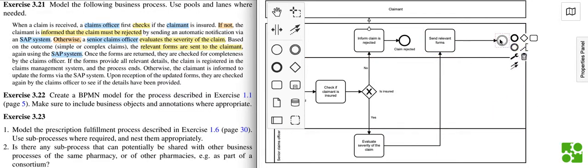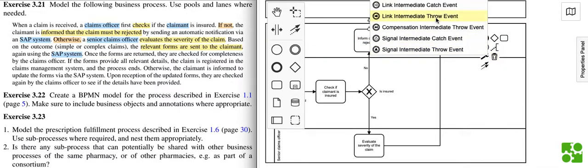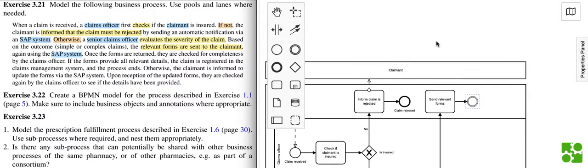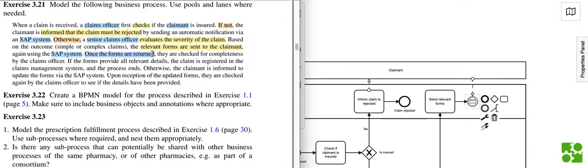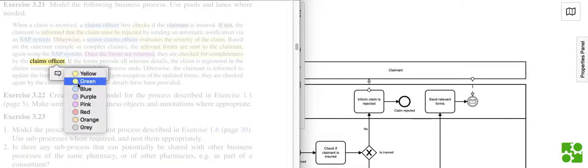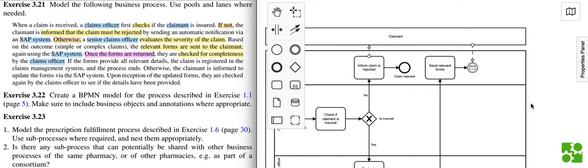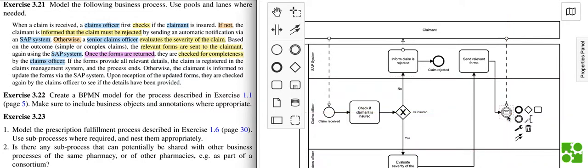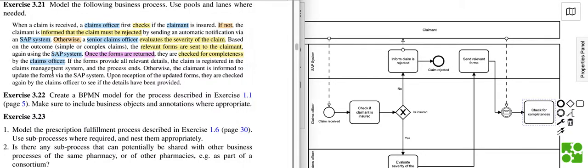Once the forms are returned, we probably have an intermediate event here - a receiving intermediate event - as the forms are returned. They are then checked for completeness by the claims officer.